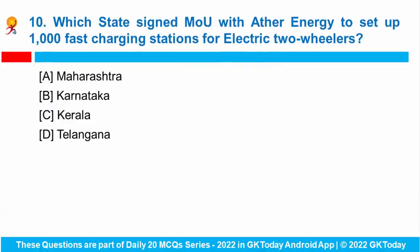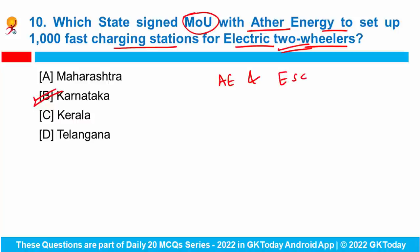The last question: which state signed a Memorandum of Understanding with Ather Energy to set up 1,000 fast charging stations for electric two-wheelers? An MOU was signed between the Karnataka state government and Ather Energy to set up 1,000 fast charging stations for electric two-wheelers across the state. The agreement was signed between Ather Energy and electric supply companies, which will provide free charging services. These electric supply companies would be the nodal agencies to provide all technical support for the charging stations.